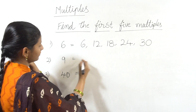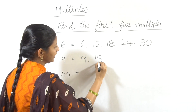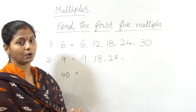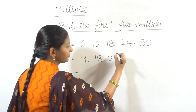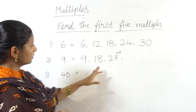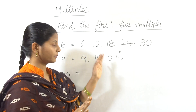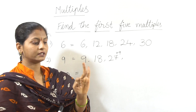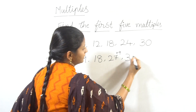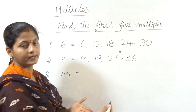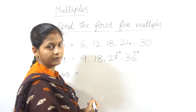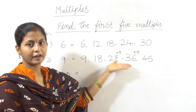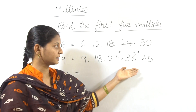First 5 multiples of 9: 9 ones are 9, 9 twos are 18, 9 threes are 27. If you don't know 9 fours, add 9: 27 plus 9 is 36. 9 fours are 36. Then 9 fives are 36 plus 9, which is 45. So the first 5 multiples of 9 are 9, 18, 27, 36, 45.